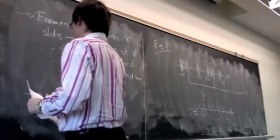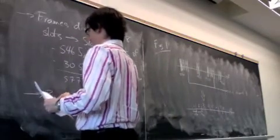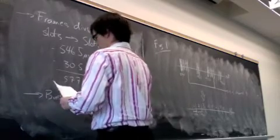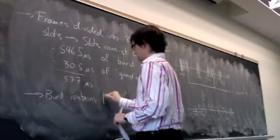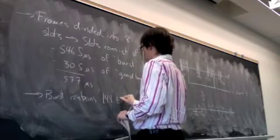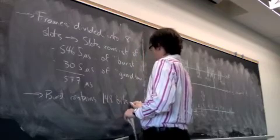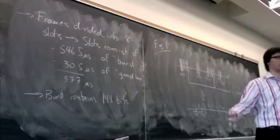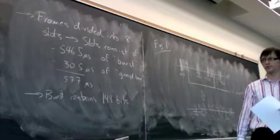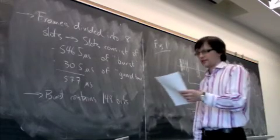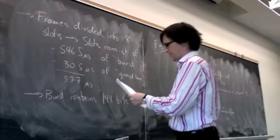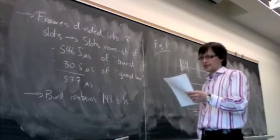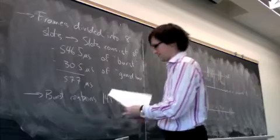The burst contains 148 bits. The guard time obviously contains nothing — in the guard time you don't transmit, and your radio is not transmitting anything. But the burst is where you transmit your data, and in the burst we have 148 bits.